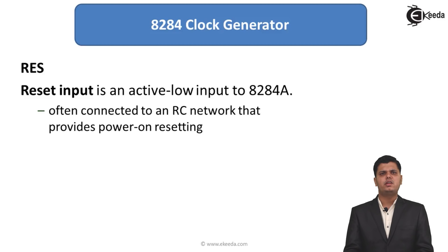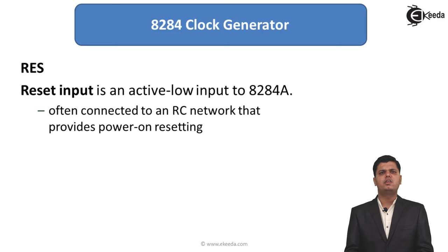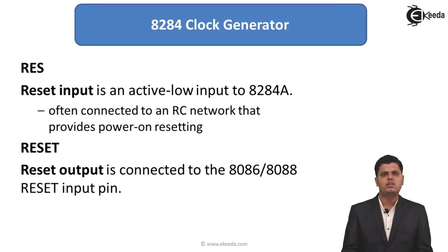The next pin is the reset input. It is an active low input pin to the 8284, often connected to an RC network that provides the power-on reset. Whenever we need to reset the 8284 clock generator, the reset signal is provided through the RC network to the 8284 IC.